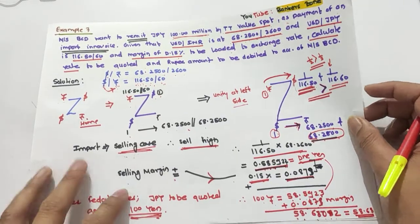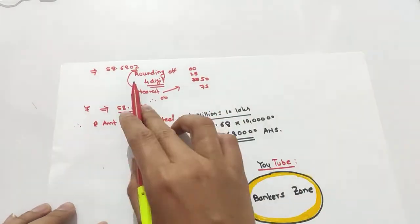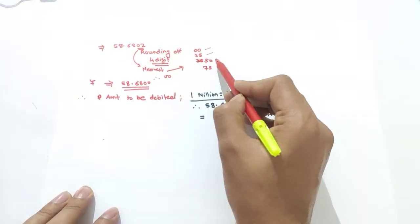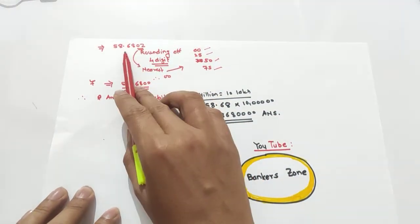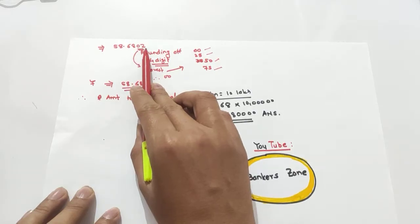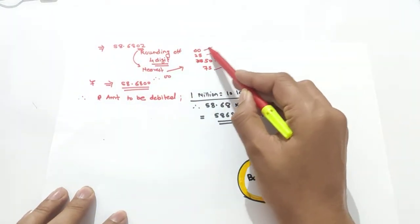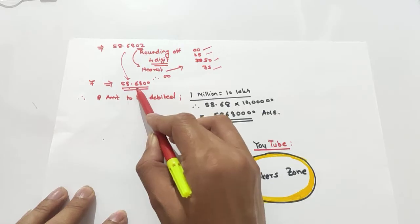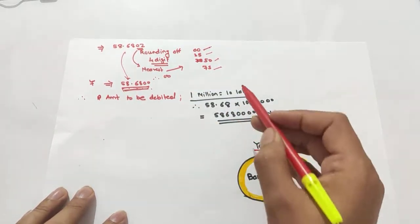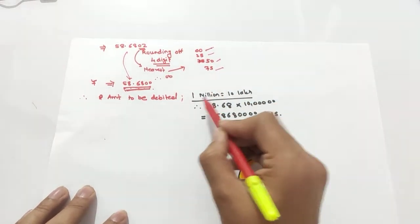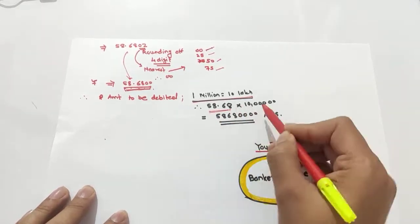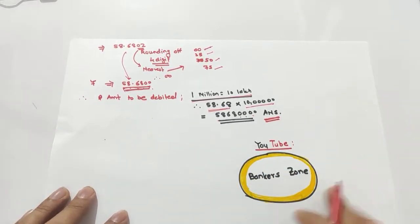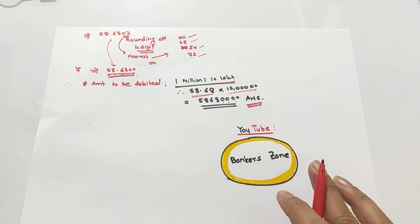For rounding off, the four decimal places after 58.68 are '00'. Using the rounding benchmarks of 0, 25, 50, 75, '00' is nearest to 0, so the rounded rate is 58.6800. The amount to be debited: 100 million yen is 10 lakh, so multiply 58.6800 by 10 lakh to get the rupee amount to debit to the BCD account.